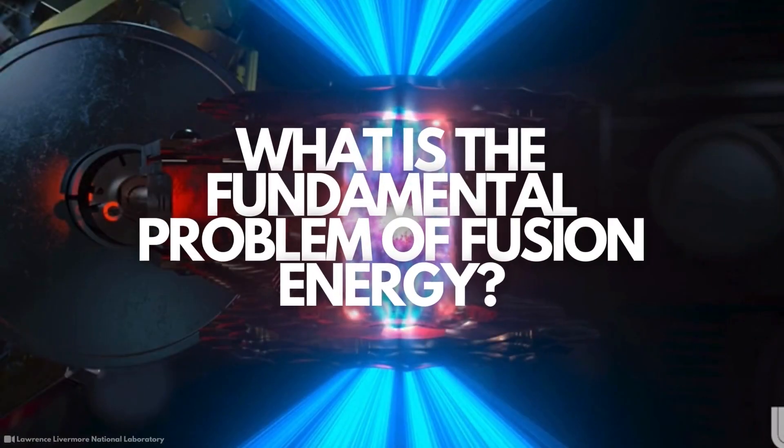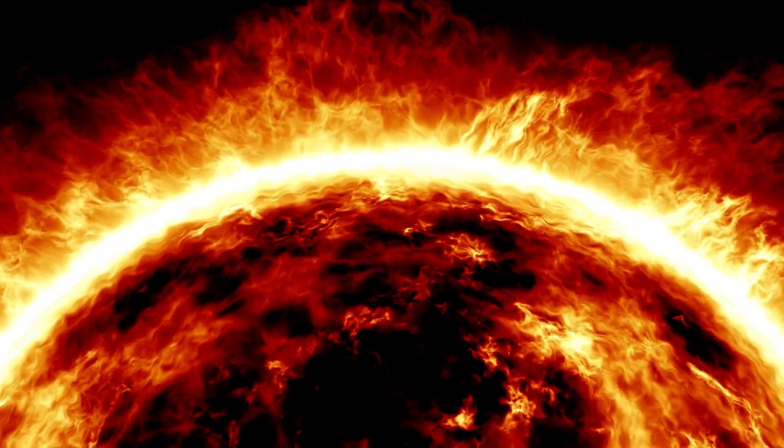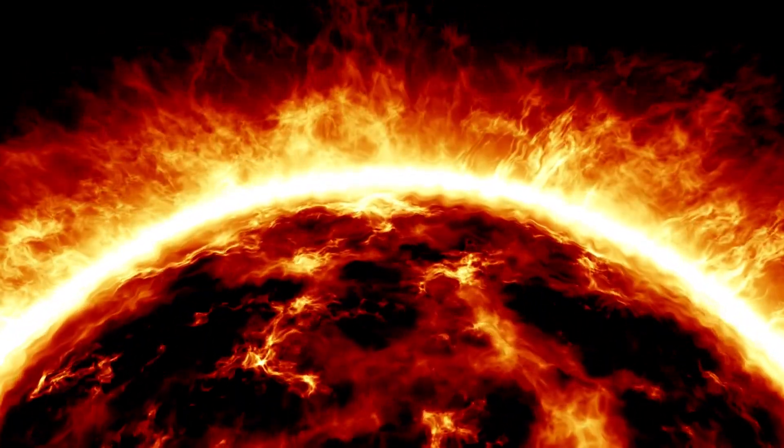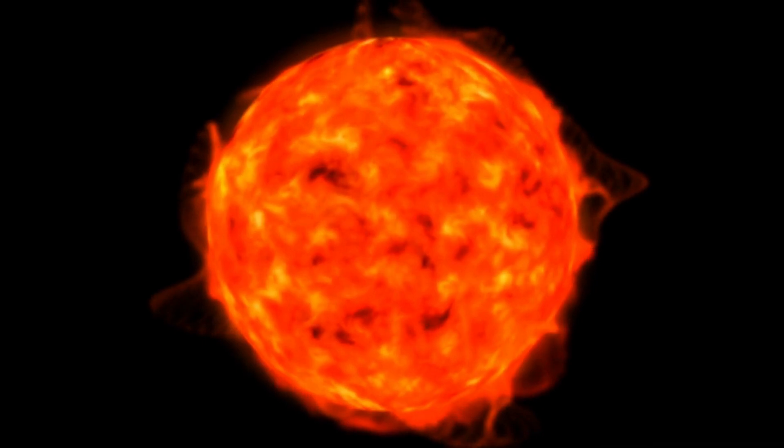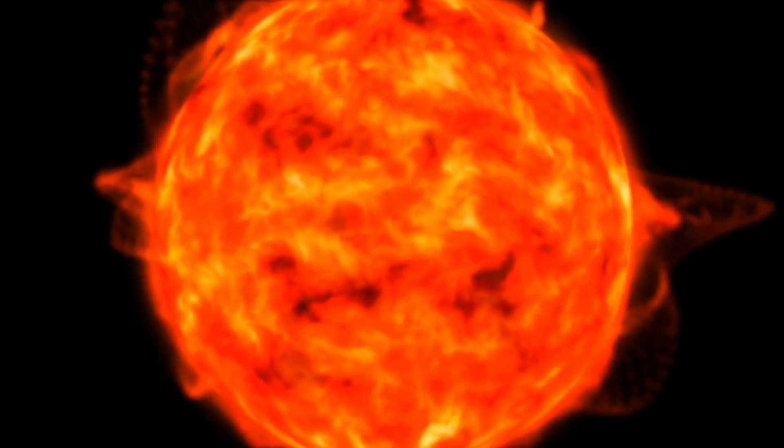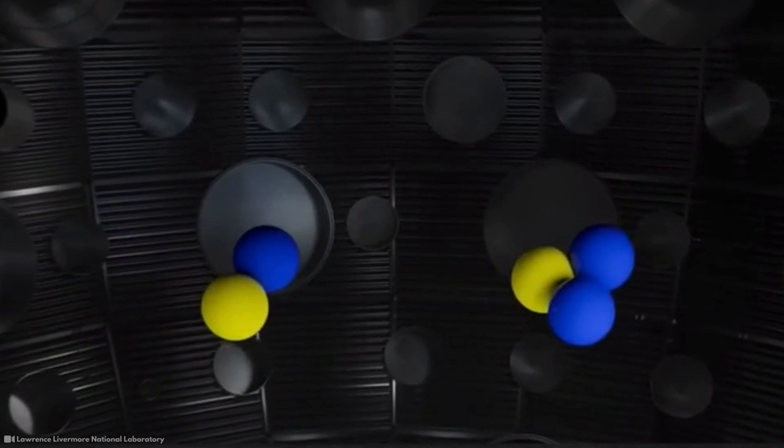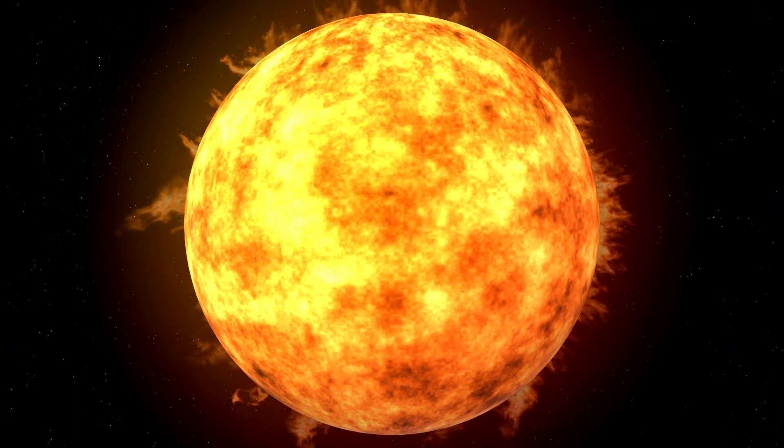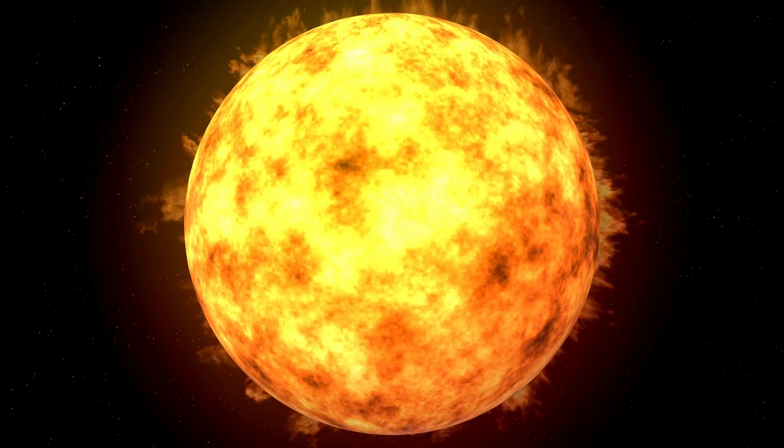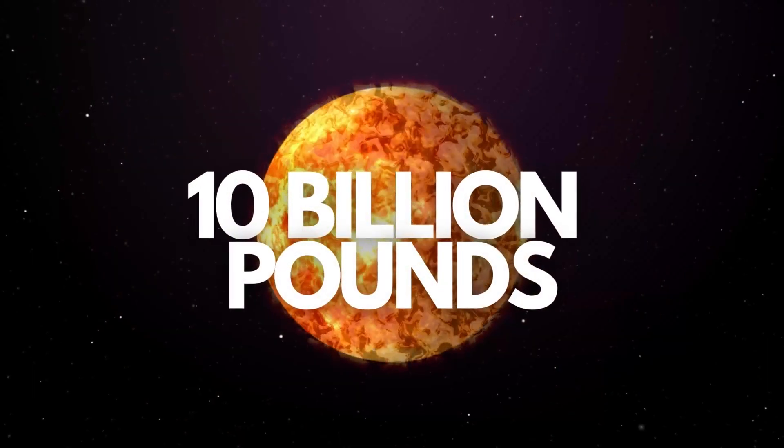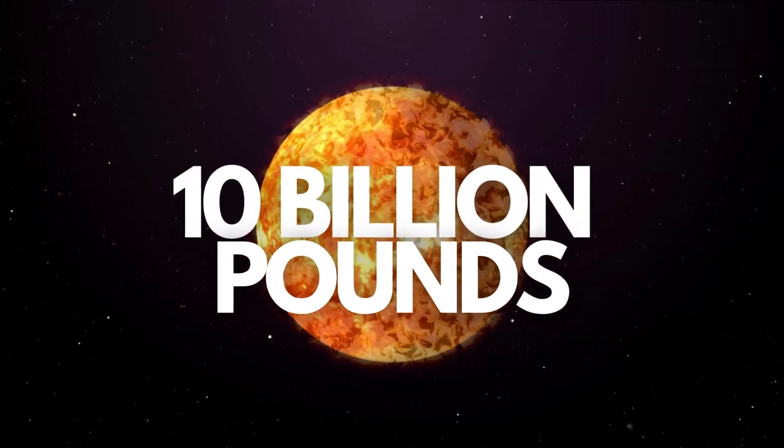What is the fundamental problem of fusion energy? The goal we want to achieve with nuclear fusion is to mimic the way the sun produces energy. The sun can easily fuse atomic nuclei to convert mass into energy. Each second thermonuclear burn in the sun's core converts approximately 10 billion pounds of mass into energy.